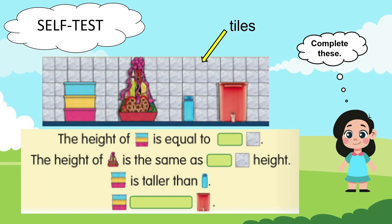The height of the tupperware is equal to three tiles. The height of the hamper is the same as five tiles. The tupperware is taller than the water bottle. The tupperware is the same height as the water dispenser.